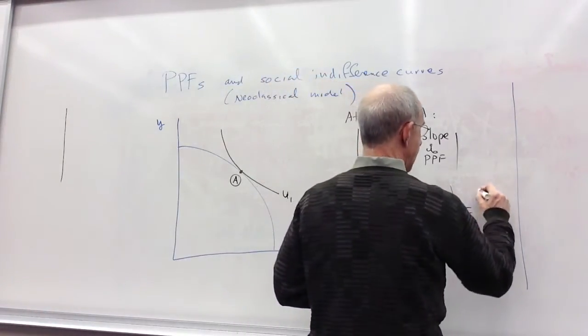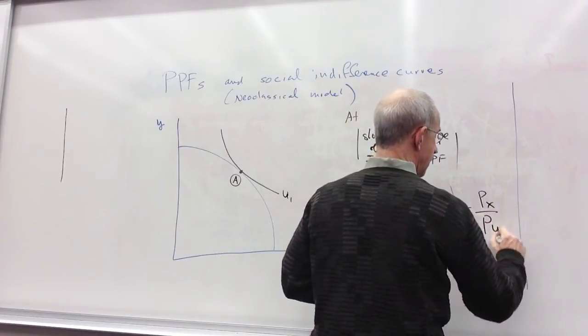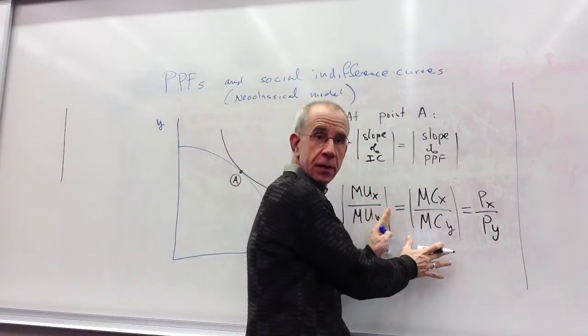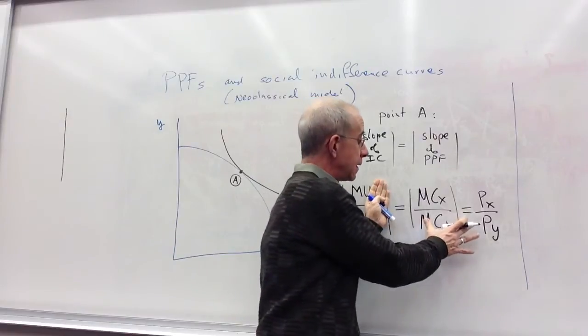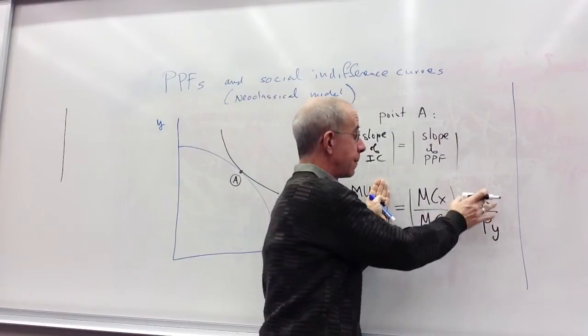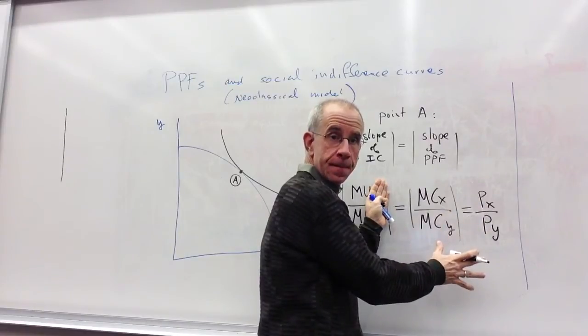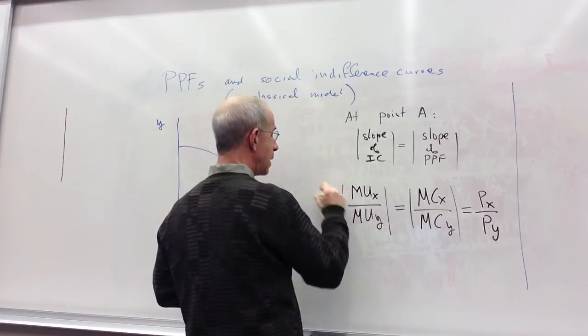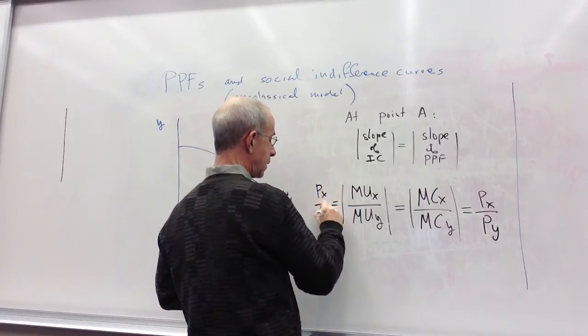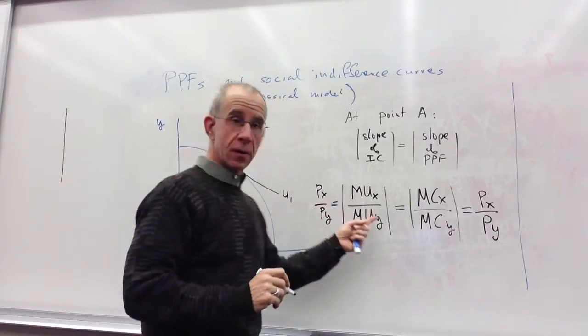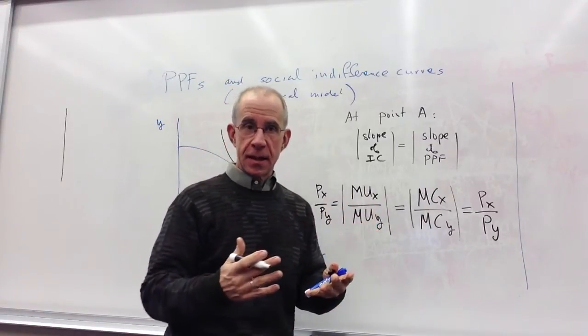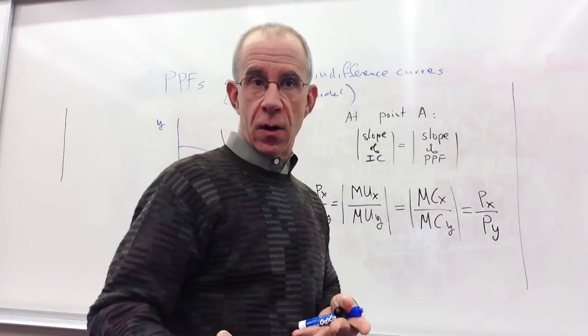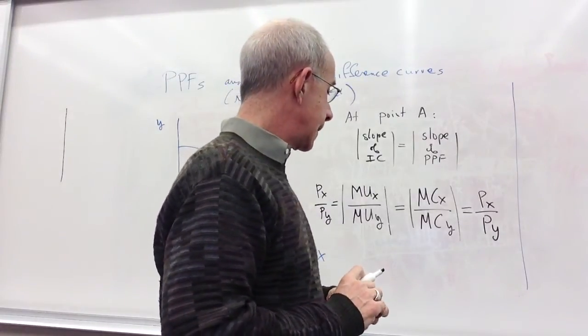We've also talked about how a price, a relative price of X equal to the ratio of the marginal costs is another way of saying that you've got a competitive outcome. Price equal to marginal cost in both industries. And we've talked about the indifference curve side that the price of X over the price of Y equal to the ratio of the marginal utilities is the same thing as saying that consumers base their demand on marginal benefit equal to marginal costs.